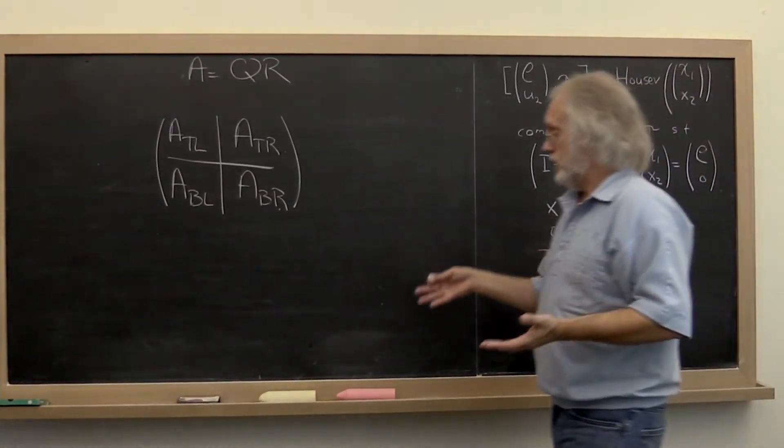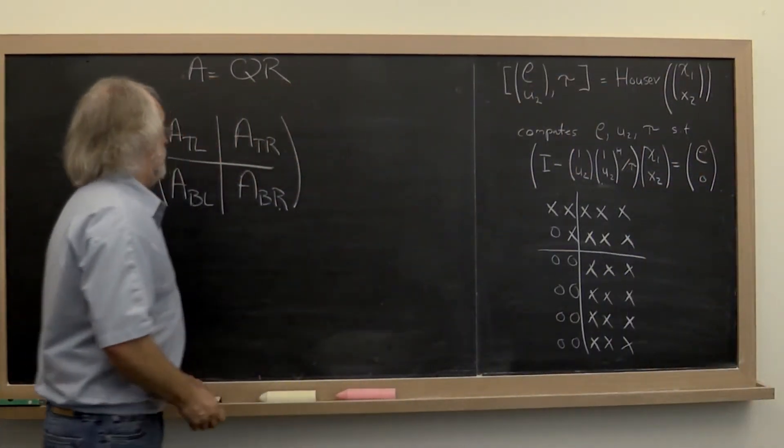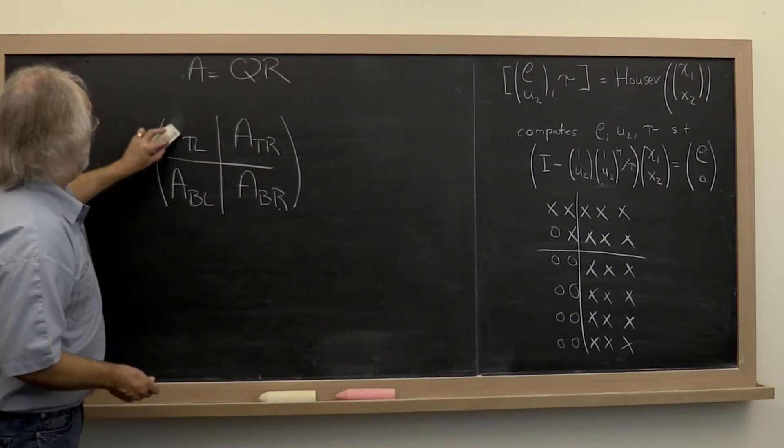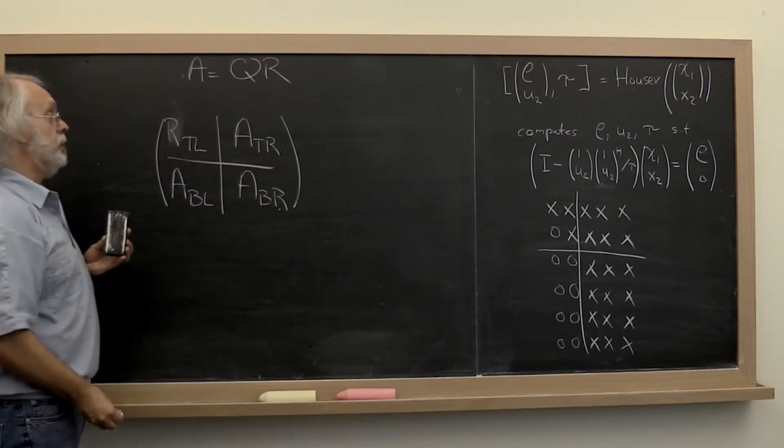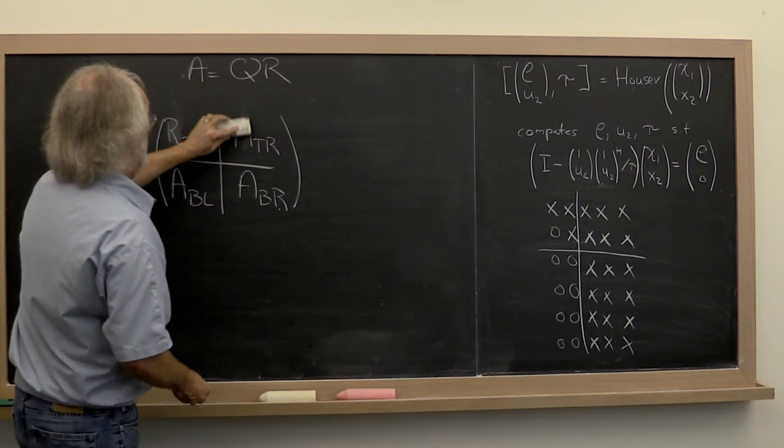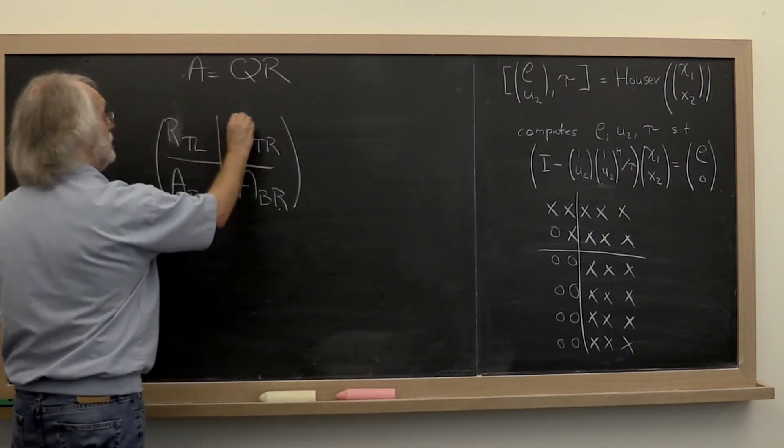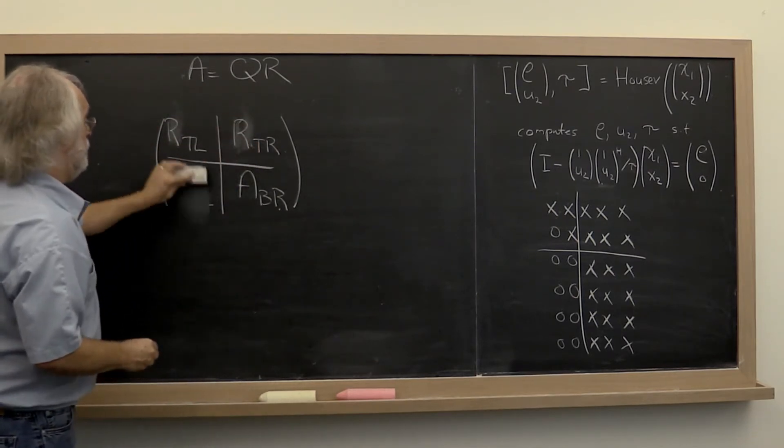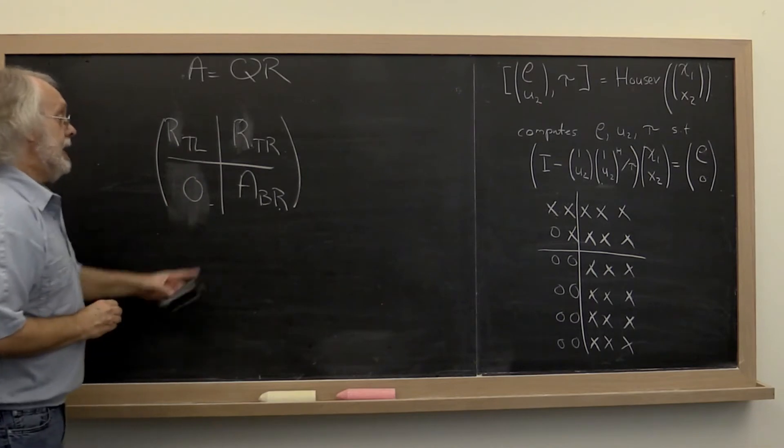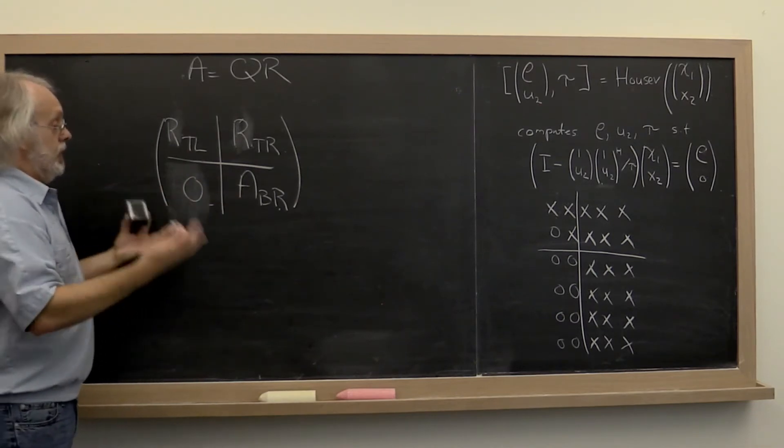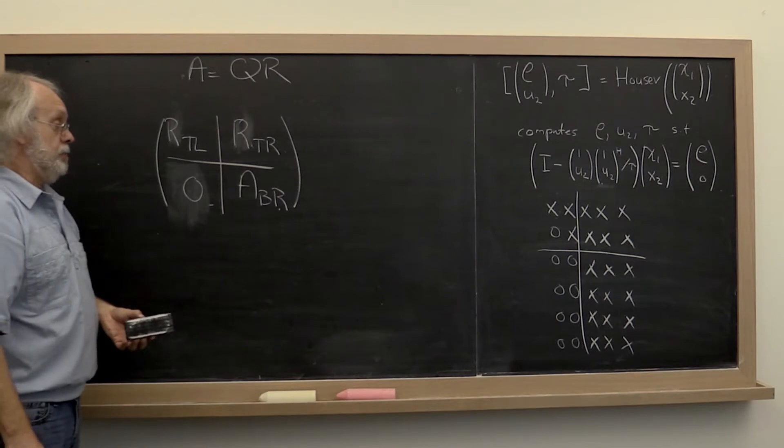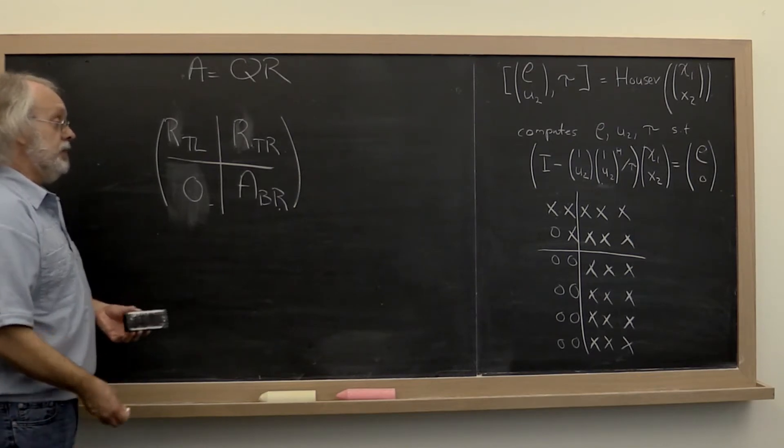If we now go over here, we can capture that picture by saying at the current moment we have overwritten the top left part with R as well as the top right part. We have computed zeros below that. And then this part of the matrix has been updated according to Householder transformations that were computed previously.